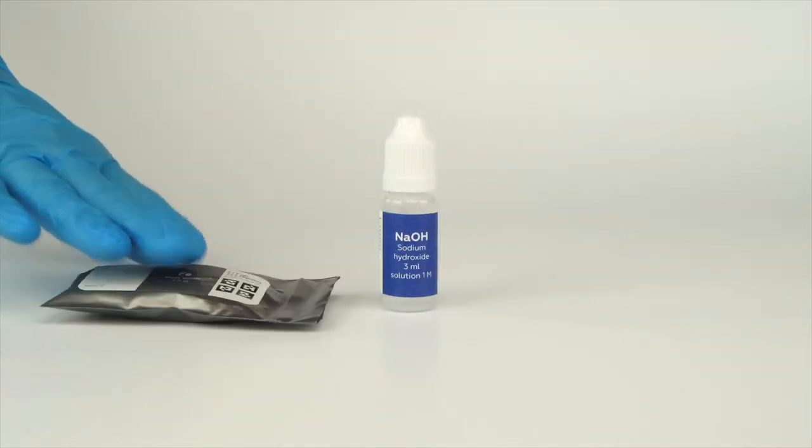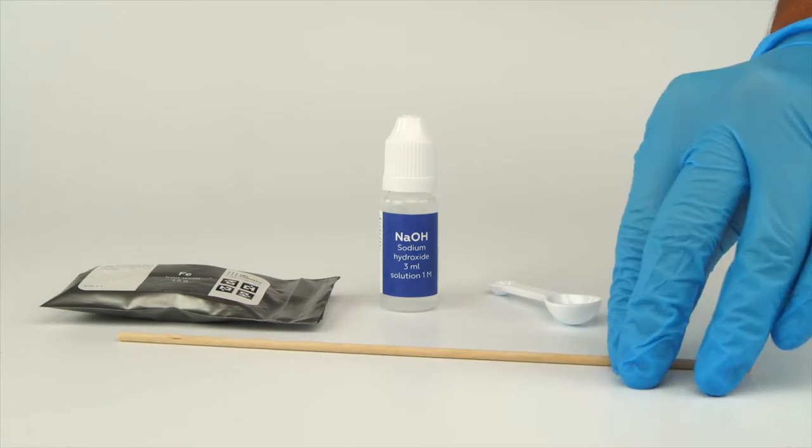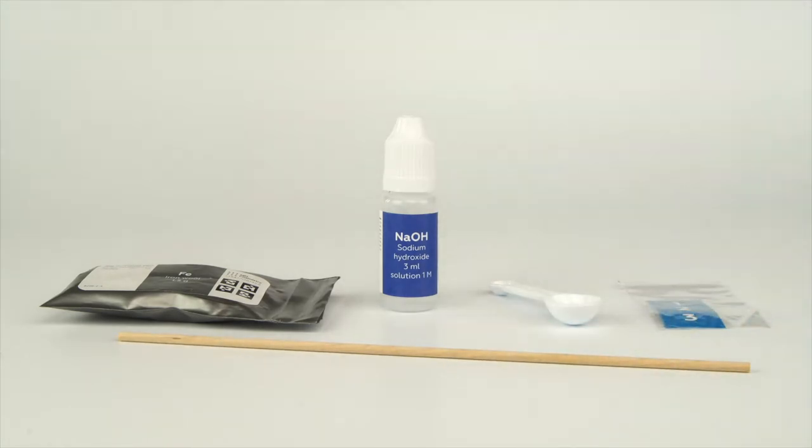For the iron corrosion experiment, you will need sodium hydroxide solution. Take the iron wool, measuring spoon, wooden stick, and numbered stickers from the experiment set.